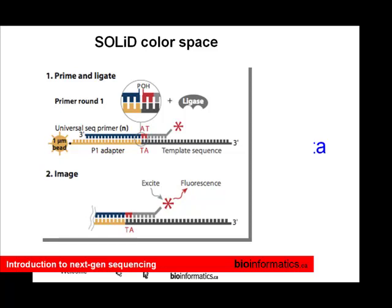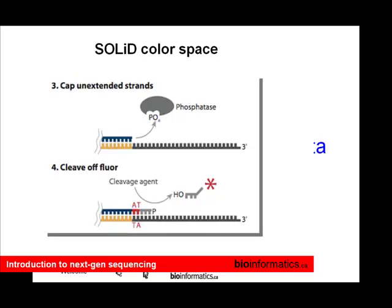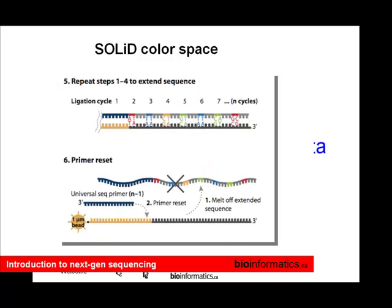You attach the probe, and it can only attach because of the matching of two nucleotides. You excite it, get a fluorescence and a color, then remove the fluorescent group with a cleaving reagent, and the whole thing starts over — you add more probes. At each step you're only interrogating two nucleotides, although the others have to anneal. Then you remove the whole molecule and start over with a shorter primer, shifting the experiment.